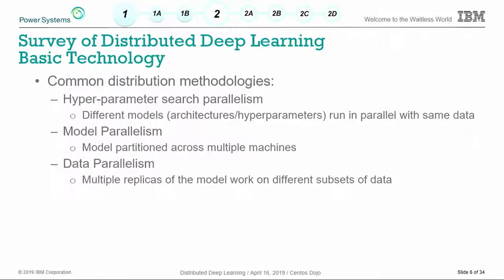The methods of distribution we're going to look at today are hyperparameter search parallelism, model parallelism, and data parallelism. We're going to focus on that data parallelism at the end.